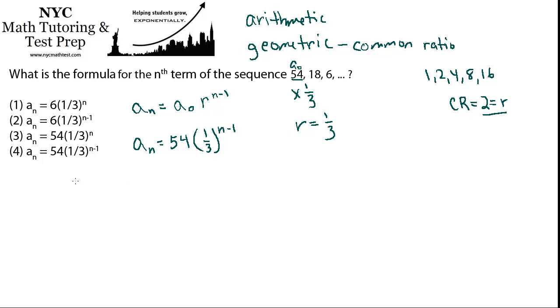Now before you go ahead and circle choice 4, which should be the right answer, let's verify that this actually works. So we have three terms that we can experiment with, let's try a couple of them. So what's the value of the first term? Well the first term should be a sub 1, and we can find out what that is using our handy formula.